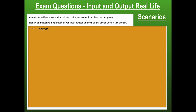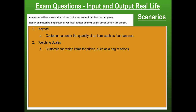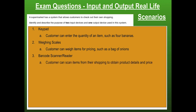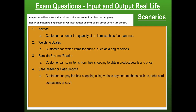Let's look at how we would write those for an exam. A keypad — you may not have a touch screen and just have an individual keypad for entering quantity. Weighing scales let you weigh items for pricing — if I buy a bag of onions, I pop them on the scale, select 'onions,' and it weighs them and gives the price per pound. The barcode scanner allows the customer to scan items for their shopping and get product details. A card reader or cash deposit — coins, notes, and card reader — are all different methods the customer can make a payment. Notice I keep repeating 'the customer can do this' — this is a self-service checkout; I'm relating it back to the scenario.